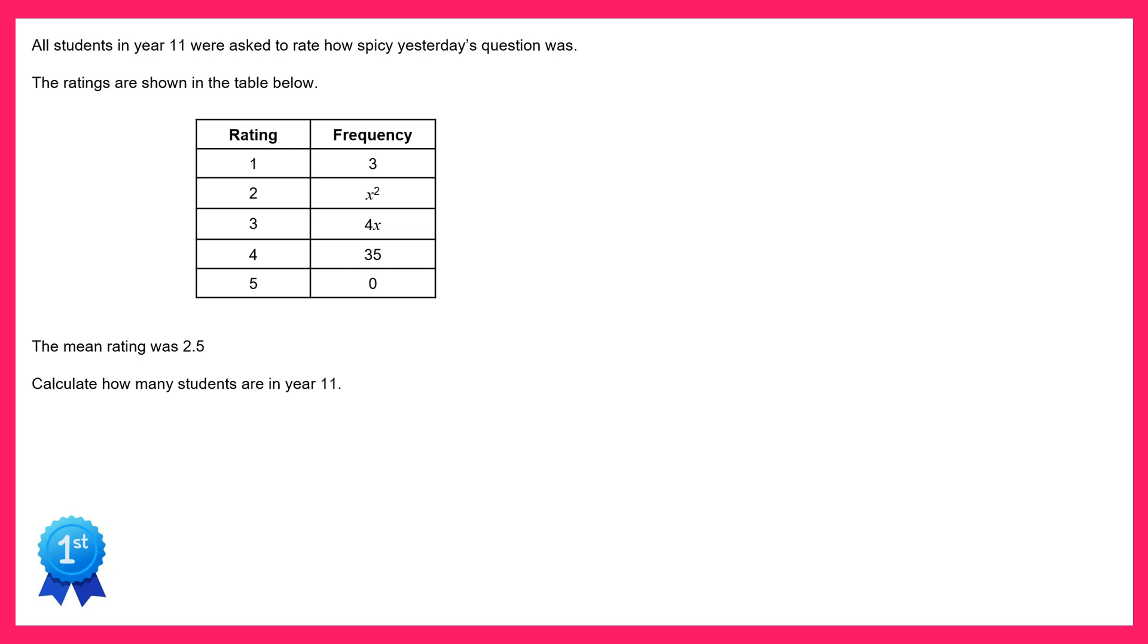So 1 times 3 is 3, 2 times x squared is 2x squared, 3 times 4x is 12x, 4 times 35 is 140 and 5 times 0 is 0.